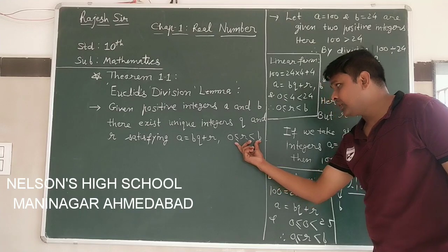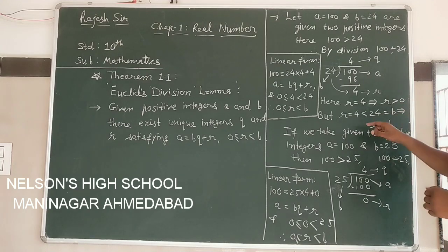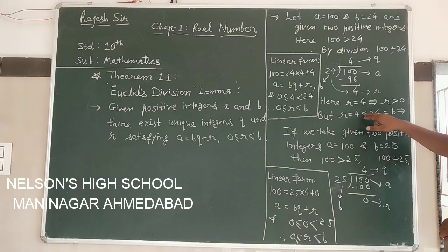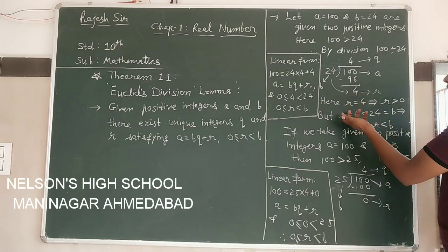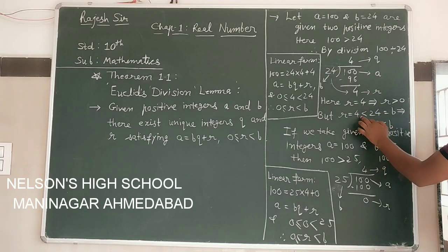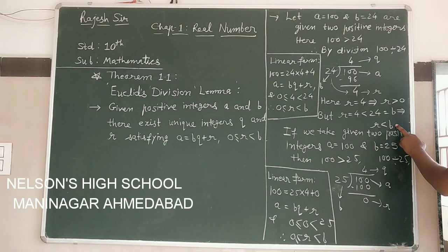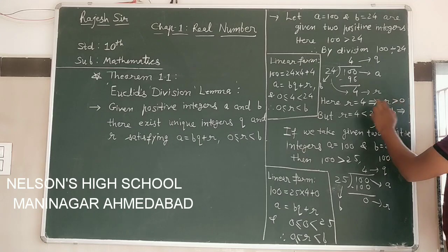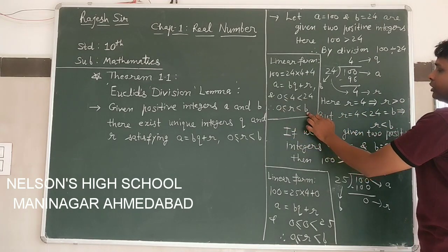Now, what about the condition on r? In this example, the remainder r equals 4. So r is greater than 0. Second, r equals 4 is always less than 24 — the divisor is always greater than the remainder, or inversely, the remainder is always less than the divisor. So 4 is less than 24. Since 24 equals b, the relationship is: r is always less than b, meaning remainder is always less than divisor. Combining both: r is greater than or equal to 0, but always less than b.